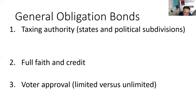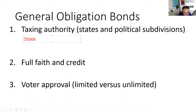General obligation bonds have taxing authority — the ability to collect money from others. Unlike a corporation, they don't have to deliver a product or service. They just need to send out the tax bills. On the state level, that's primarily going to be income taxes and sales taxes.